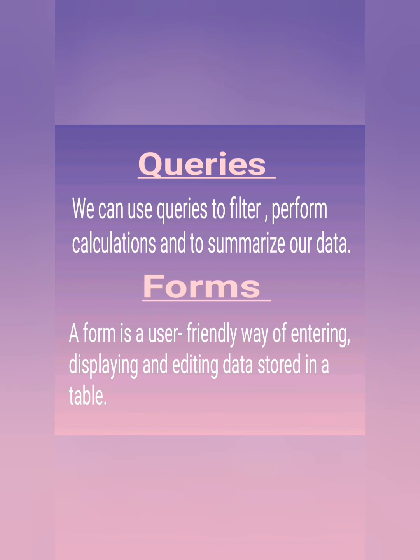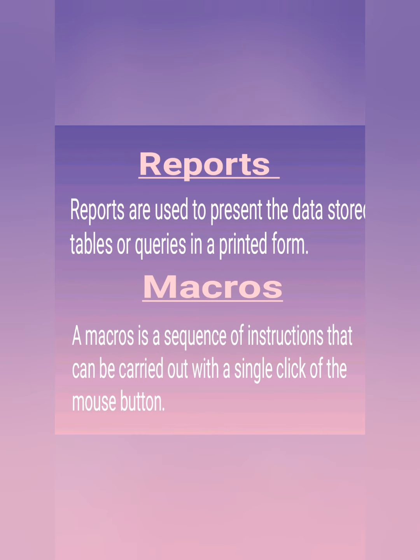हमारे data को filter करने के लिए, उसे summarize करने के लिए हम queries का use करते हैं. Next one is Forms. Forms एक ऐसा user-friendly way है, जो table में stored data को enter करता है, display करता है और edit करता है. Reports का use table और queries में stored data को printed form में present करना है. Macros — Access में यह एक ऐसा tool है, जो common task को automatic करना allow करता है. यह instructions का sequence है, जो एक single mouse click पर carry हो सकता है.